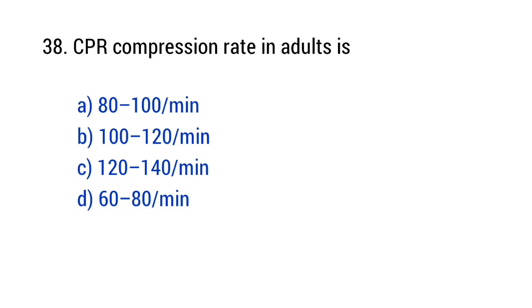Question number 38: CPR compression rate in adults is? The right answer is option B — 100 to 120 per minute.